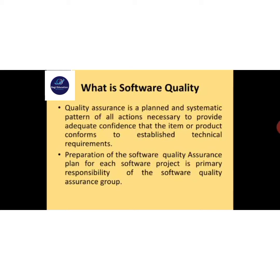Preparation of the software quality assurance plan for each software project is the primary responsibility of the Software Quality Assurance Group. The responsibility is about how software quality is maintained. That is the main responsibility.